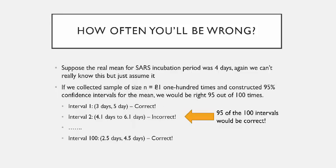But suppose you talk to another 81 SARS patients and construct another interval saying you're 95% confident the mean is somewhere between 4.1 days and 6.1 days. The actual value is four days — that's outside the interval, so that one is incorrect. If you look at all 100 intervals, 95 of the 100 would contain the number four, and roughly five times out of 100 it would not. That's what a 95% confidence interval means: you're going to be right 95 out of 100 times you do this experiment.